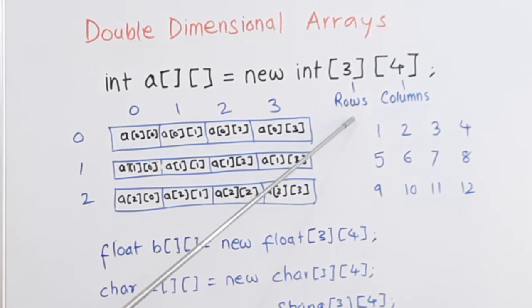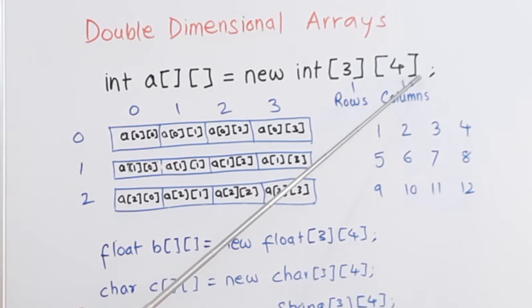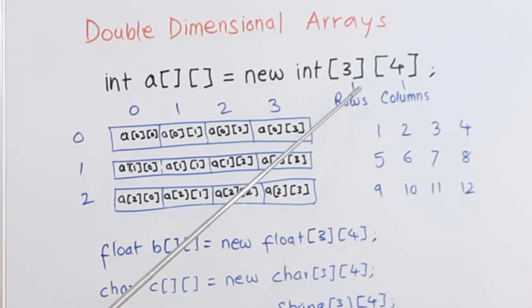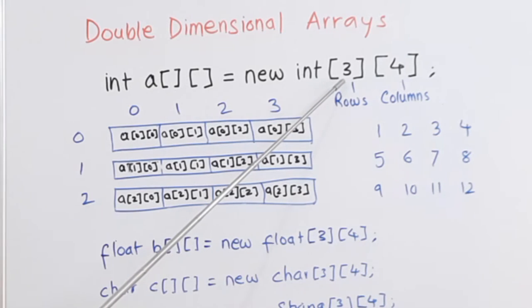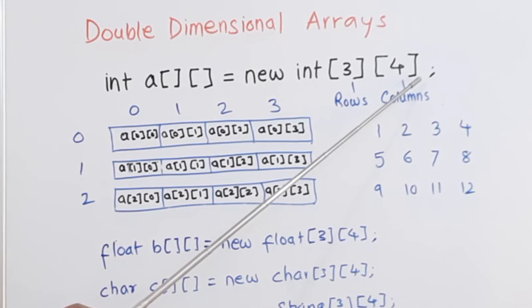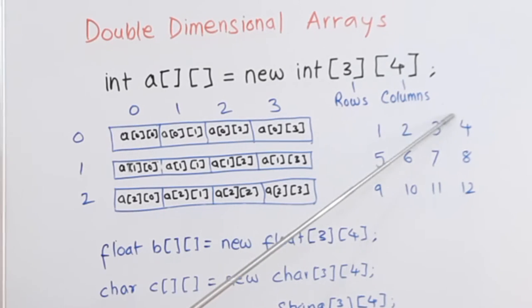In the first bracket, we will write rows. In the second bracket, we will write columns. This is a point to be noted: the first number represents rows - first row, second row, third row - and second bracket represents columns: 1, 2, 3, 4. So three rows and four columns.